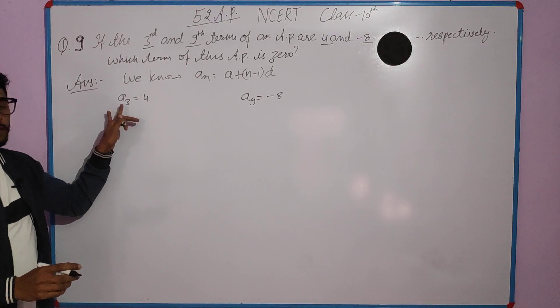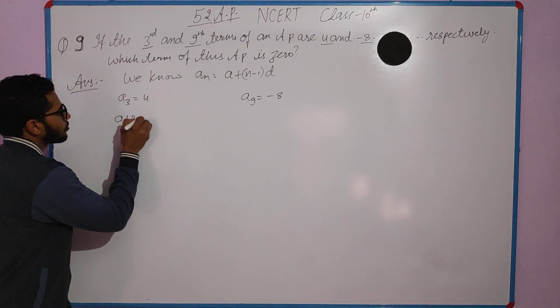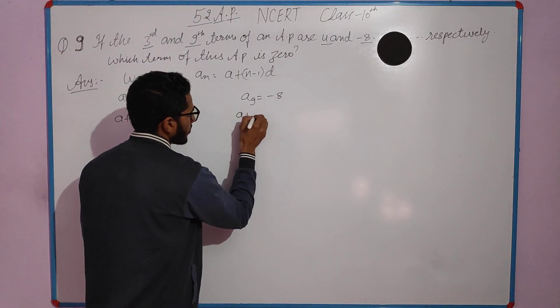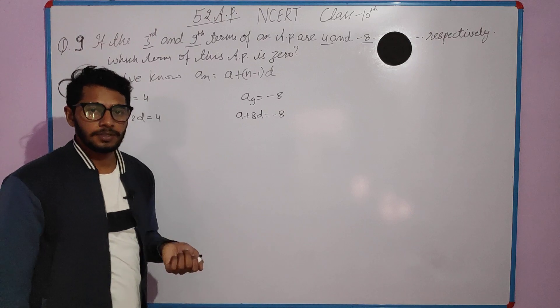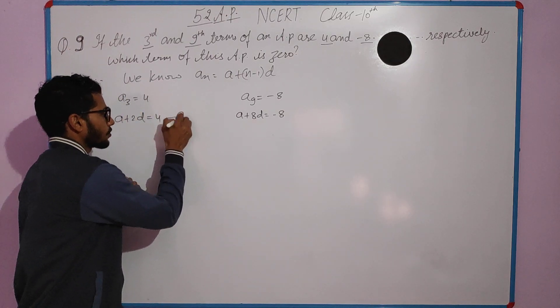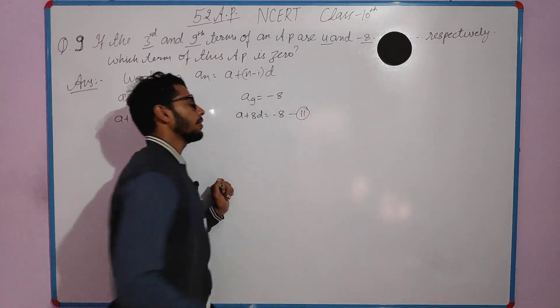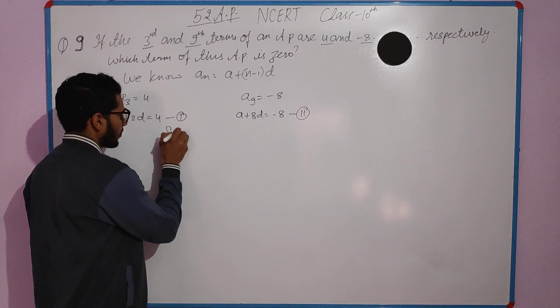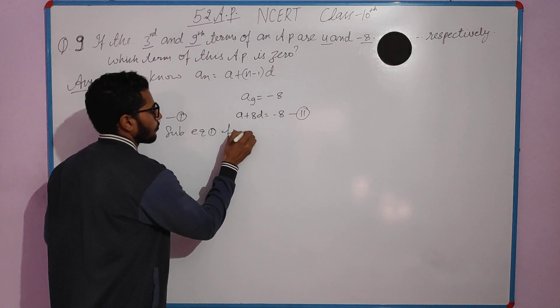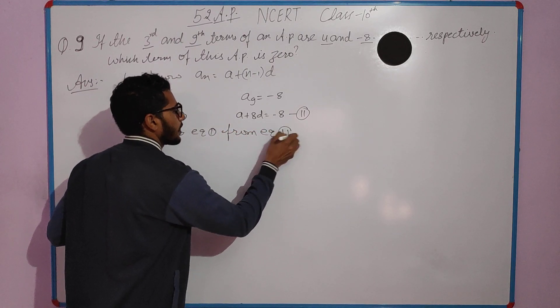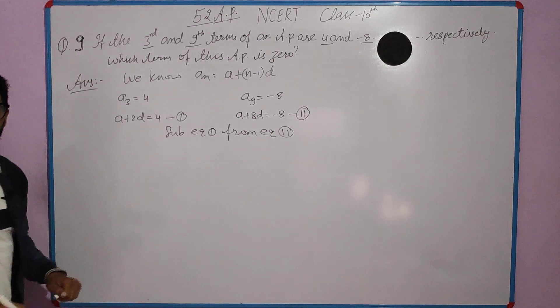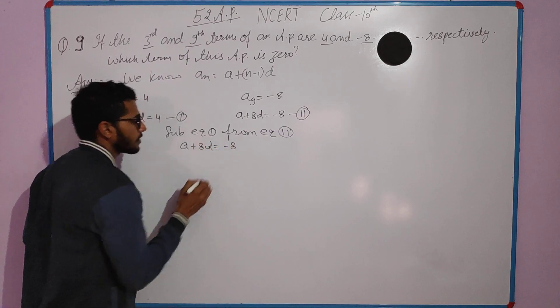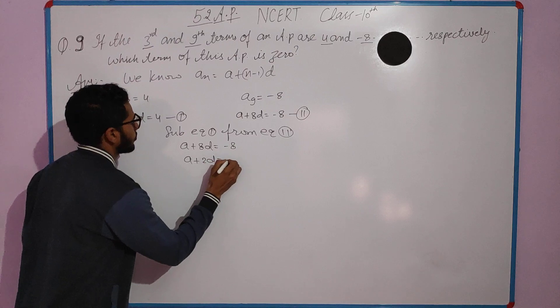This is equation first and this is equation second. To find the value of d, we'll subtract equation first from equation second. From equation second, we subtract equation first. a plus 8d equals minus 8, and a plus 2d equals 4.